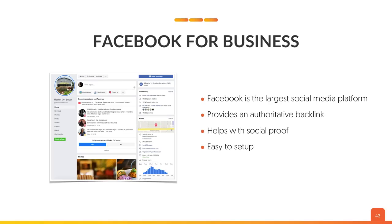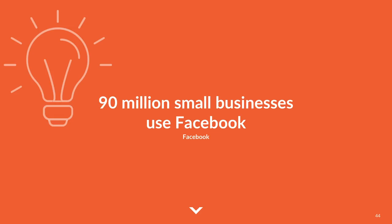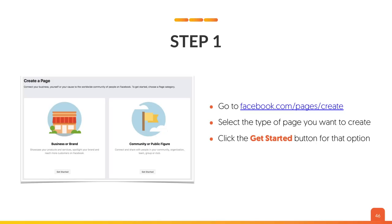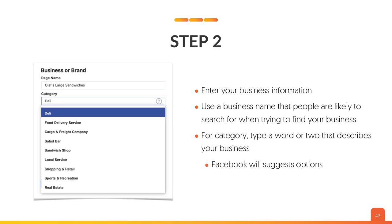Now the next one is Facebook for businesses. Facebook is the largest social media platform — they provide an authoritative backlink to you, and even if it doesn't help with search rankings, that's okay. It helps with social proof and it's easy to set up. 90 million small businesses use Facebook. So it's time to create your Facebook business page. Step one: go to facebook.com/pages/create, select the type of page you want to create, and click Get Started. Typically most people click the Business or Brand page. Step two: enter your business information — use a business name that people are likely to search for.